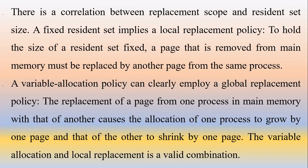There is a correlation between replacement scope and resident set size. A fixed resident set implies a local replacement policy — to hold the size of a resident set fixed, a page removed from main memory must be replaced by another page from the same process. A variable allocation policy can clearly employ a global replacement policy, where replacement of a page from one process with that of another causes one process's allocation to grow by one page and the other's to shrink by one page. The variable allocation and local replacement combination is also a valid option.